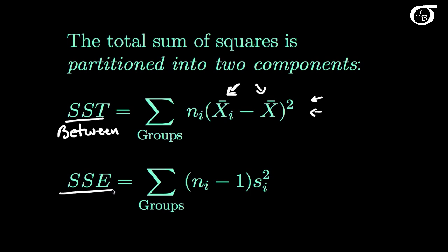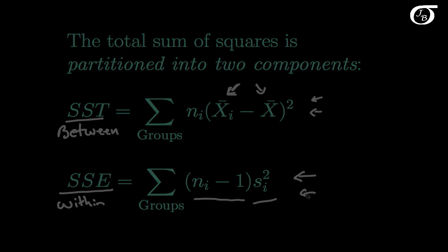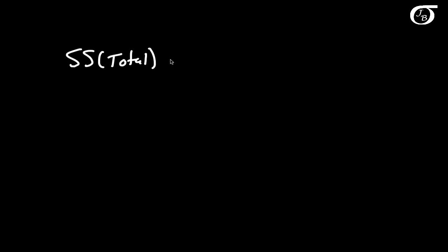Down here is our sum of squares error, which you might see sometimes as sum of squares residual or sum of squares within. This is looking at the variability within the groups. Si squared is the variance in the i-th group, and then we are simply multiplying that by the number of observations minus 1. If there is a lot of variability within the groups, then this quantity is going to tend to be large. And if there is very little variability within the groups, then this quantity is going to tend to be small. Sum of squares total is equal to sum of squares treatment plus sum of squares error — the sum of squares between plus the sum of squares within.